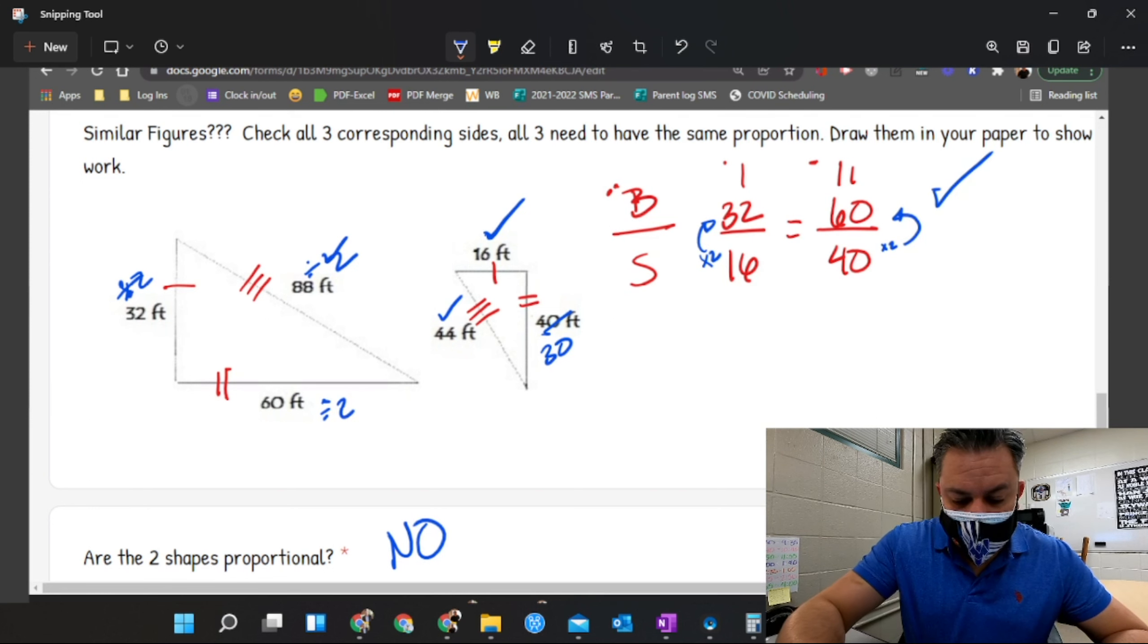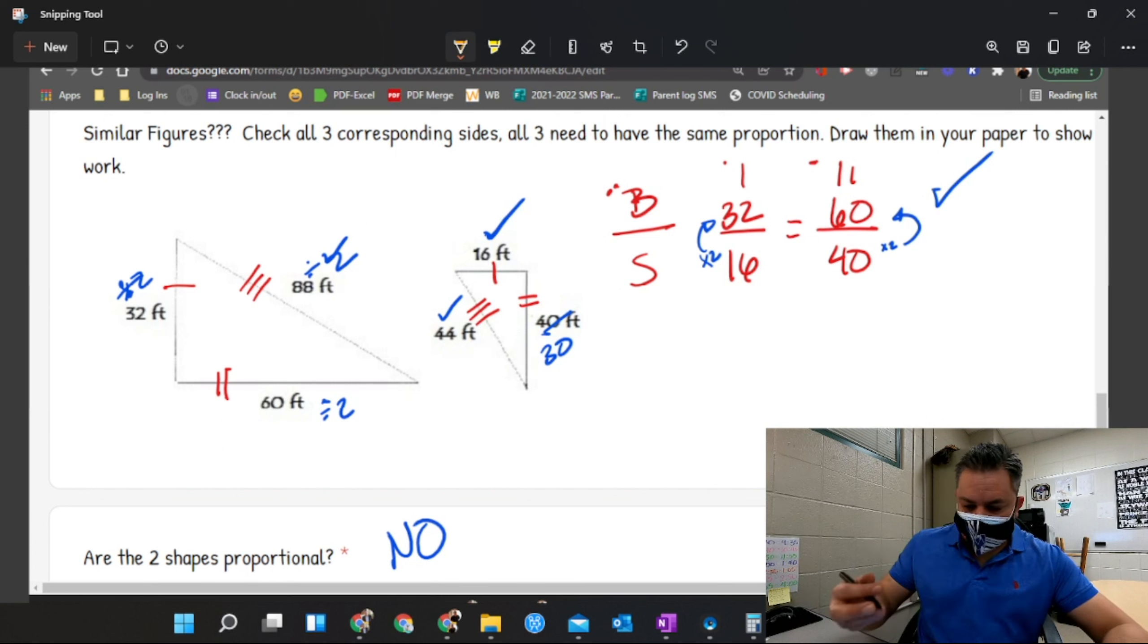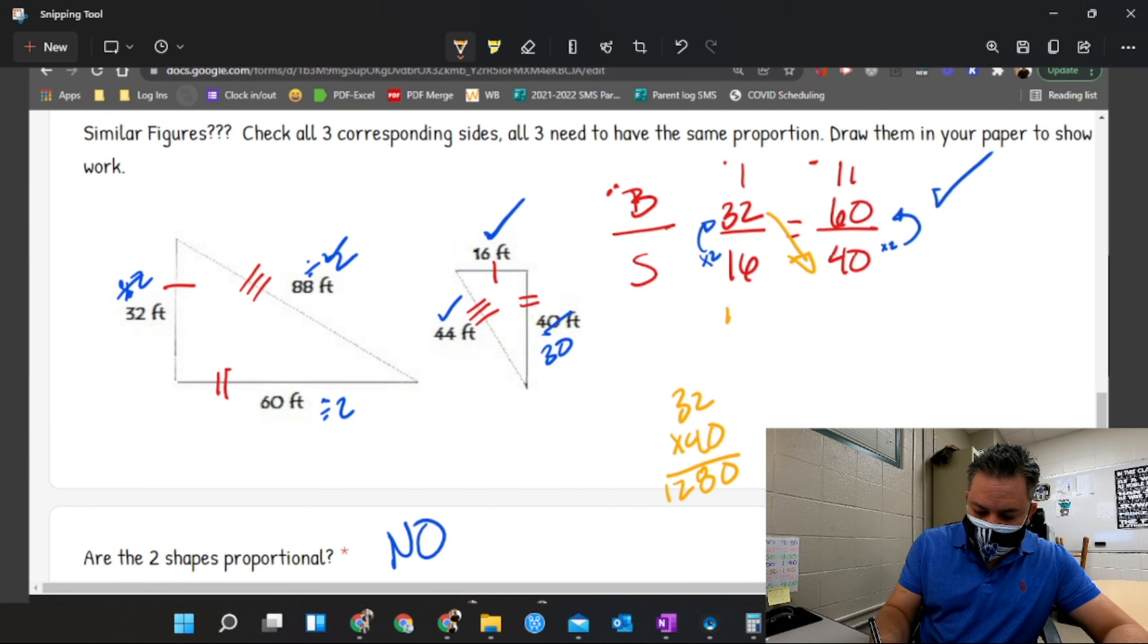The other way to find proportionality, and this is gonna work all the time, multiply these two. What do you get? 32 times 40, that is 1280. Okay, you cross multiply and put it on the bottom of the first one.